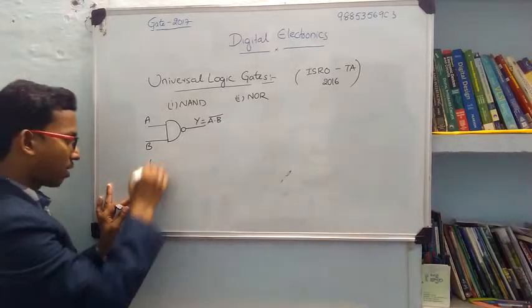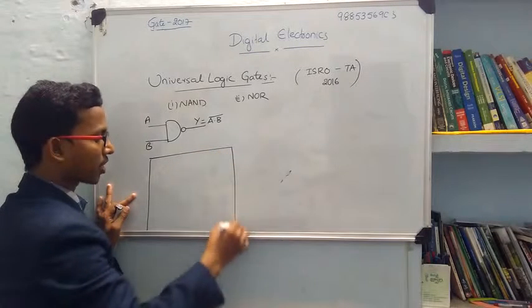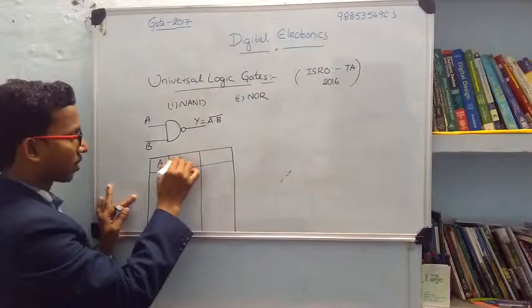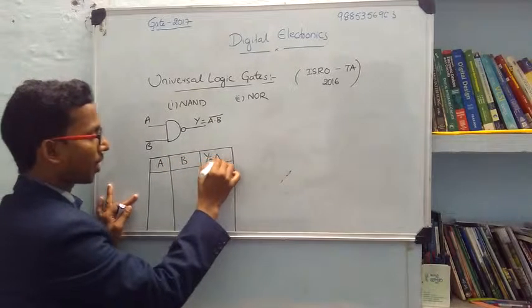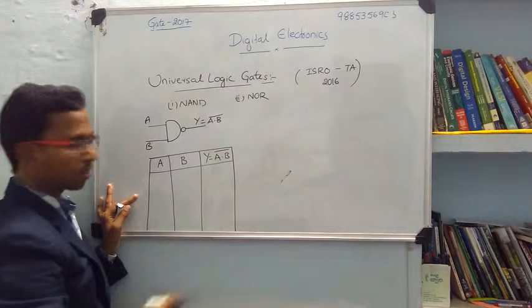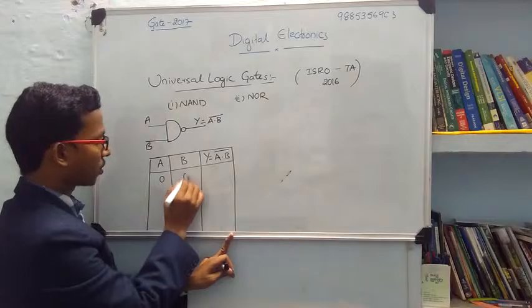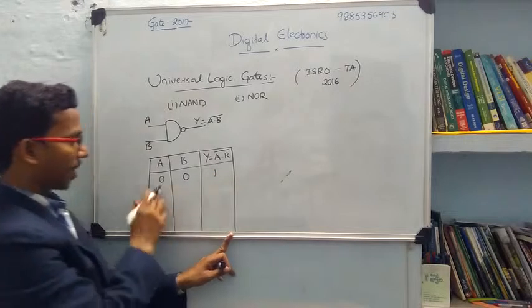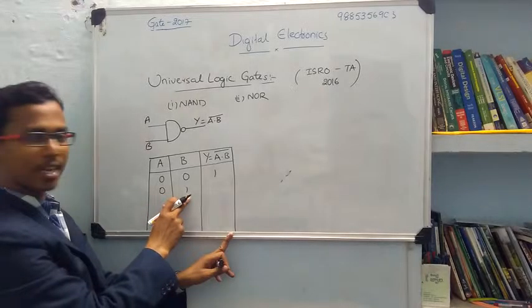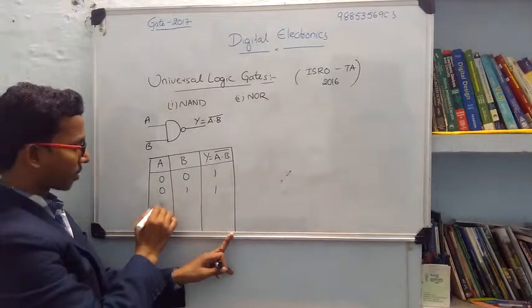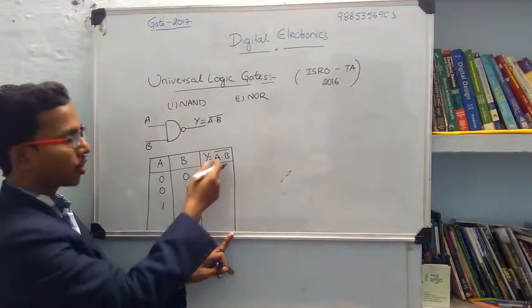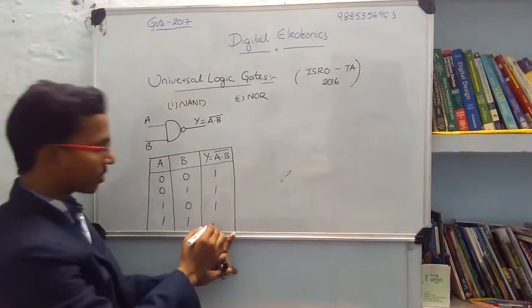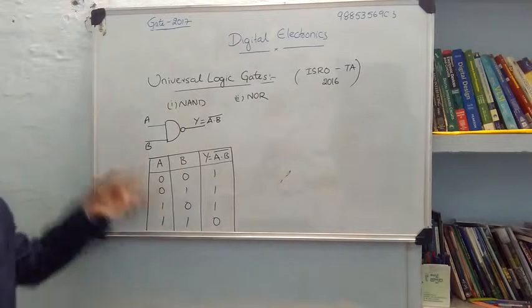Suppose if you take the truth table — we call it the functionality of the gate. This is A, this is B, and Y equals A dot B whole bar. If you take signal 0, 0: 0 into 0 is 0, and 0 whole bar is 1. If signals are 0, 1: 0 into 1 is 0, and 0 whole bar is 1. For 1, 0: 1 into 0 is 0, and 0 whole bar is 1. For 1, 1: 1 into 1 is 1, and 1 whole bar is 0. That is the functionality of the NAND gate.